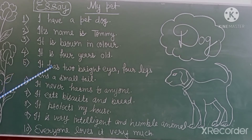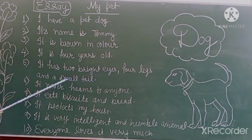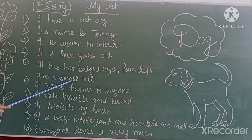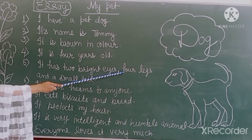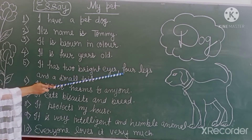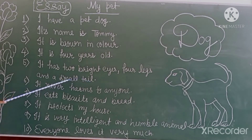Next is: It has 2 bright eyes, 4 legs and a small tail. Iski 2 chamki liyaan ke bright, 4 tangein hain, and a small tail. Tail matlab choti poonch hai.